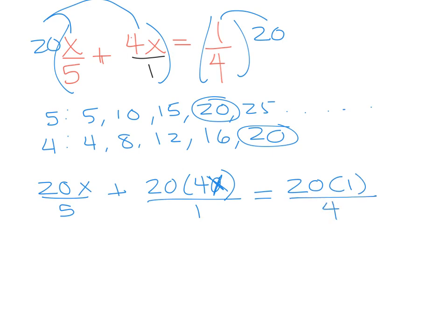Okay, well 20 times x is 20x, 20x divided by 5 is 4x. 20 times 4x is 80x, 80x divided by 1 is 80x.